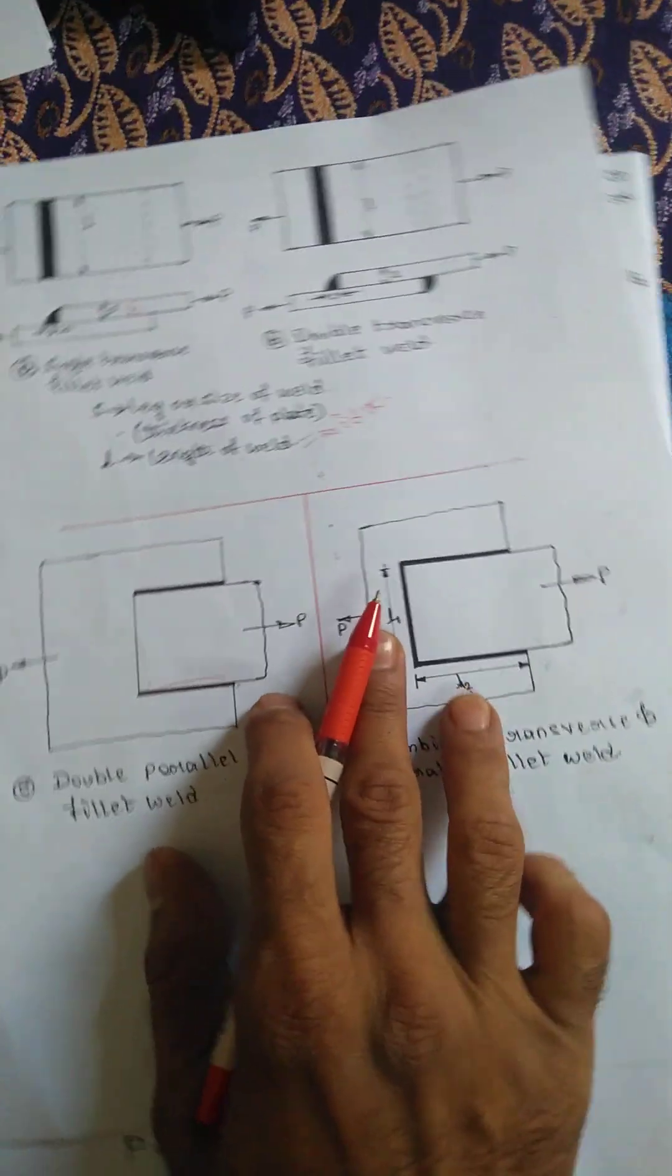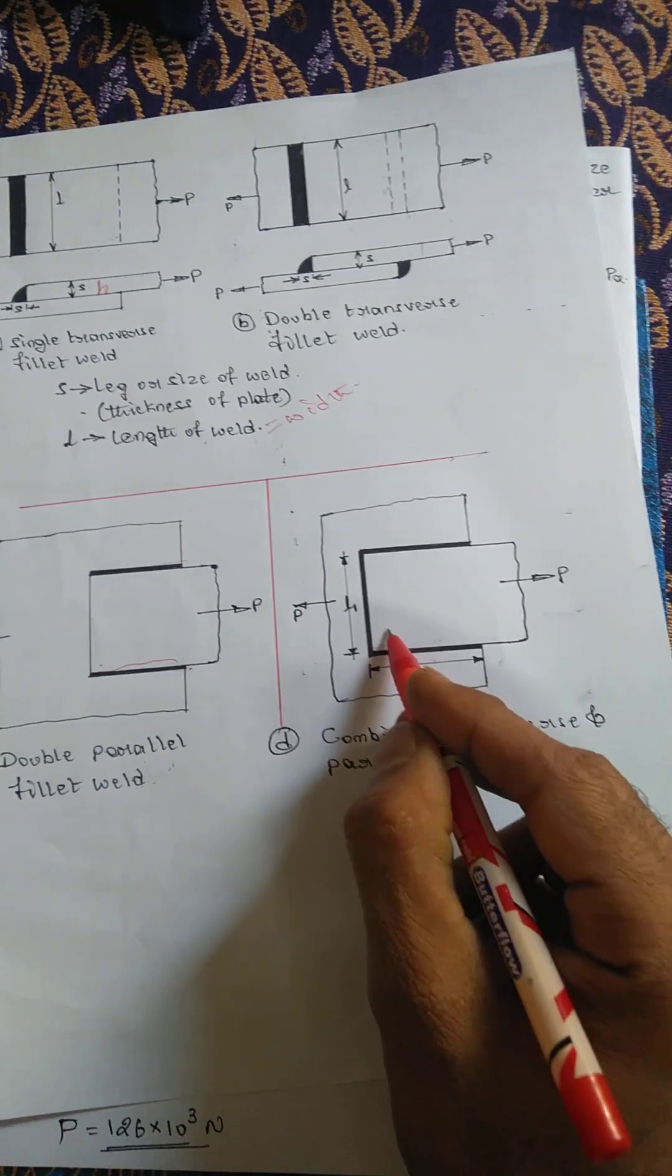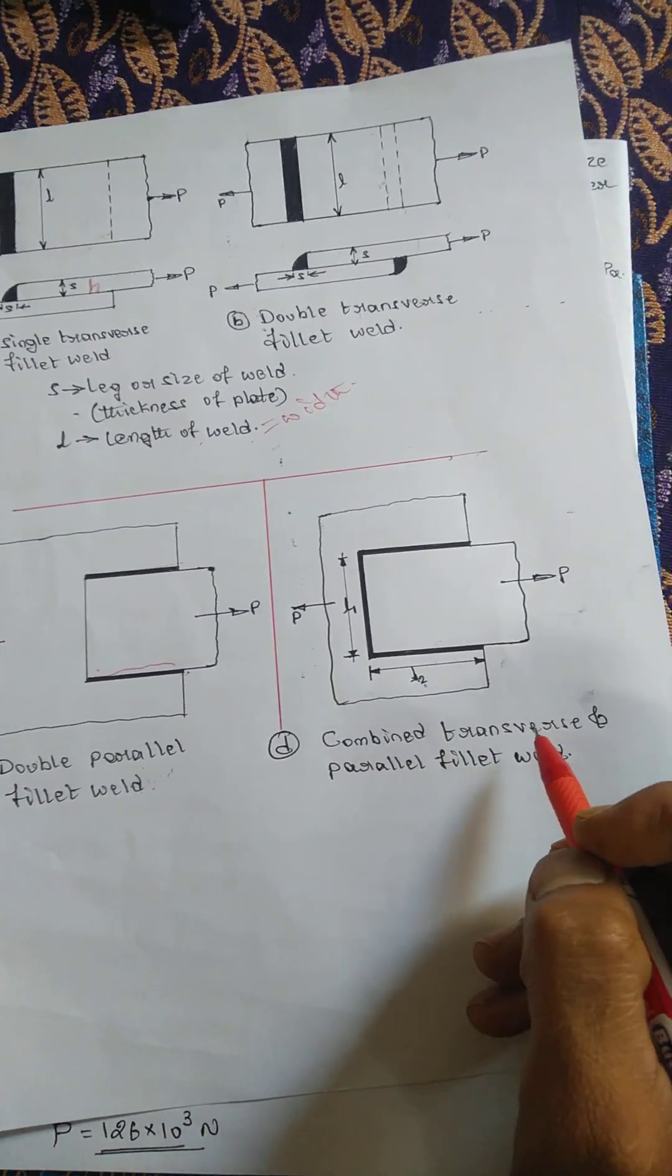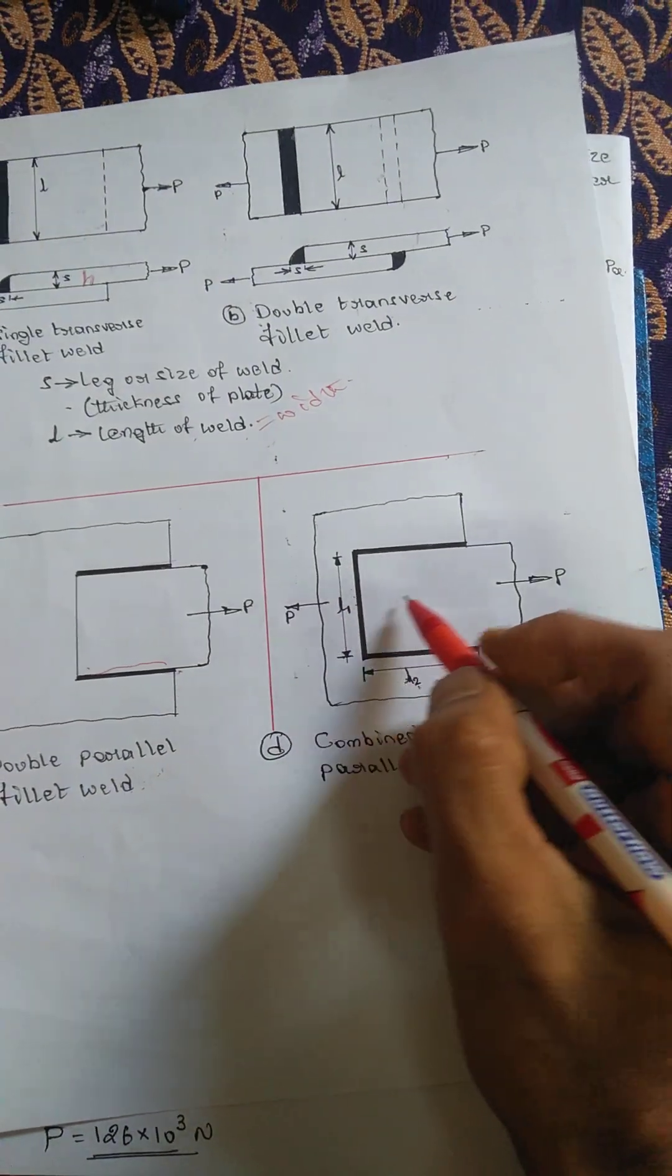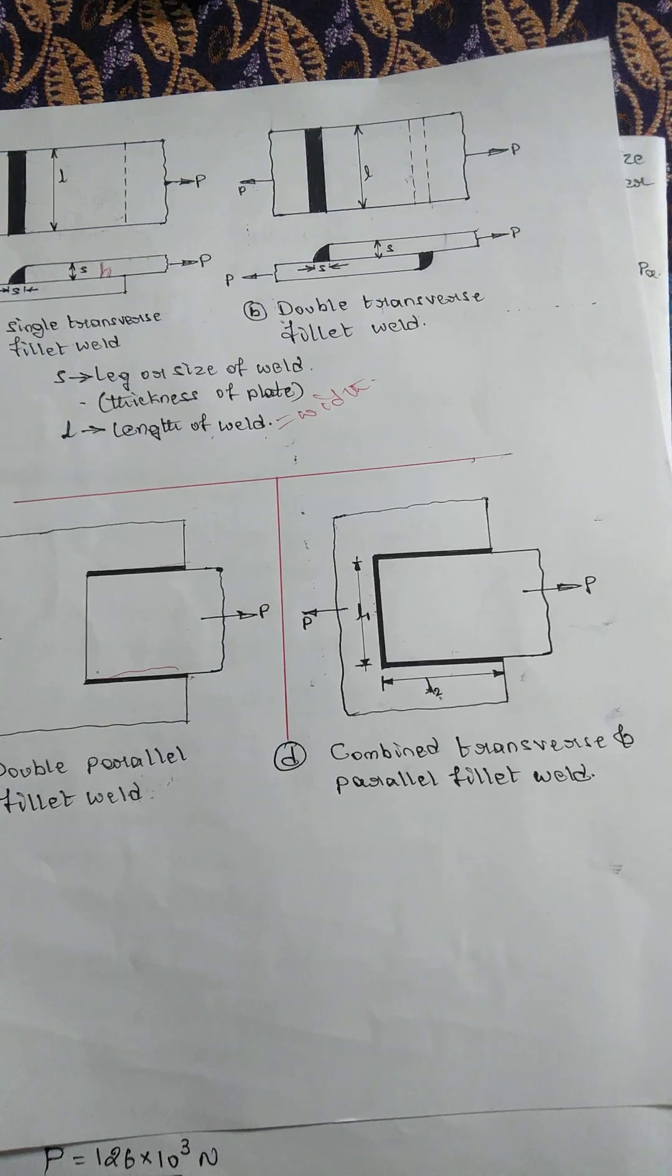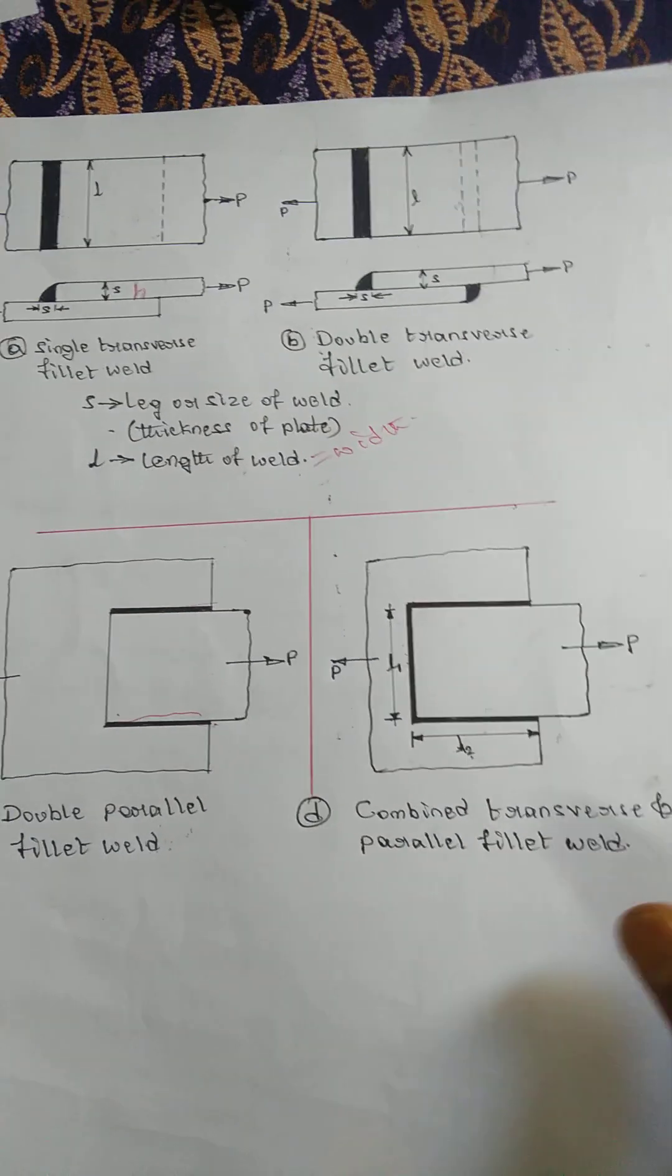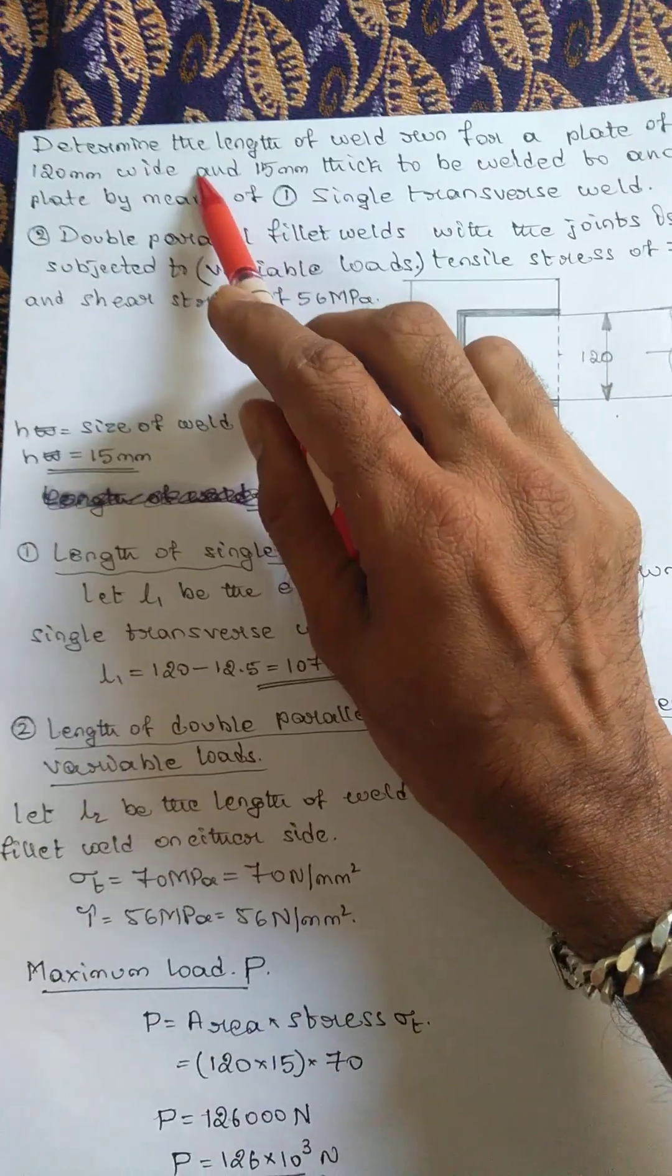Accordingly the equation also changes. Here this is combination of transverse weld and double parallel fillet weld. Now we will have a look at a problem.